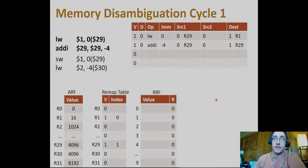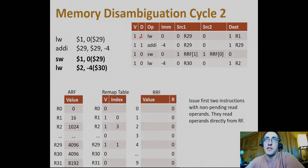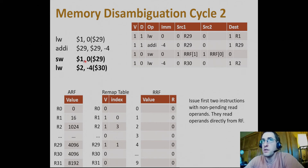On the next cycle, when the next two instructions finish decode, they get written into the issue queue, and we're able to dispatch the first two instructions because they're ready — their read operands are non-pending and they get their values directly from the register file, R29. We populate the next two issue queue entries with the instructions coming out of the front end.